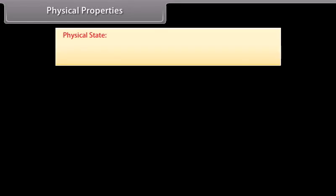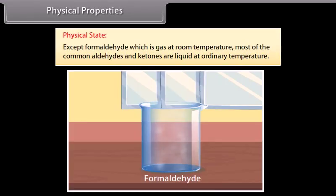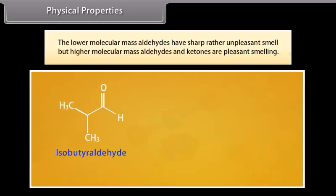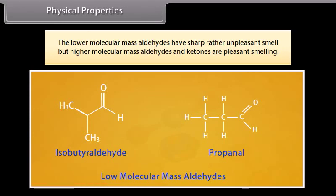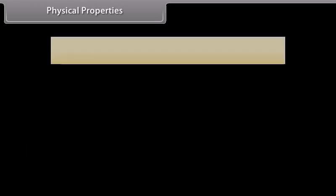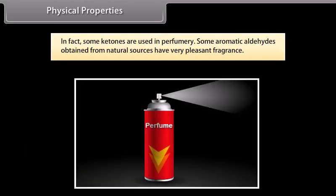Physical properties — Physical state. Except for formaldehyde, which is a gas at room temperature, most common aldehydes and ketones are liquids at ordinary temperature. The lower molecular mass aldehydes have a sharp, rather unpleasant smell, but higher molecular mass aldehydes and ketones are pleasant smelling. Some ketones are useful in perfumery, and some aromatic aldehydes obtained from natural sources have very pleasant fragrance.